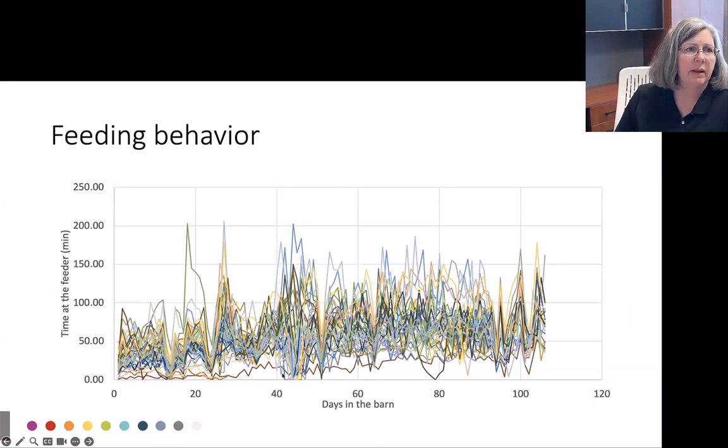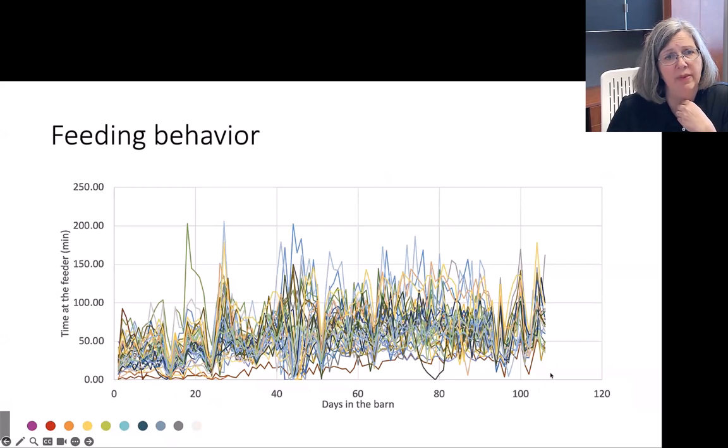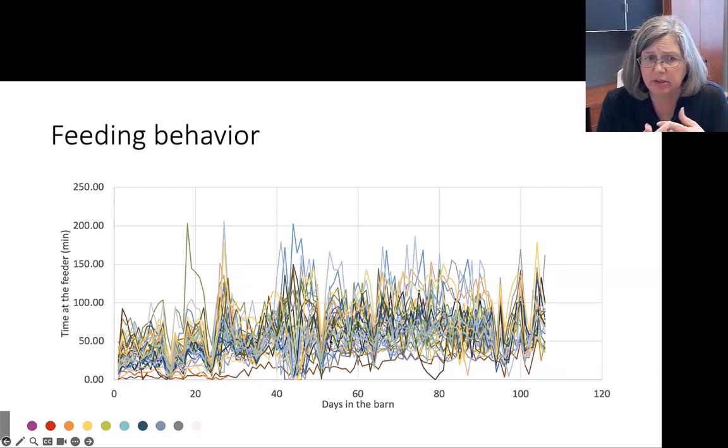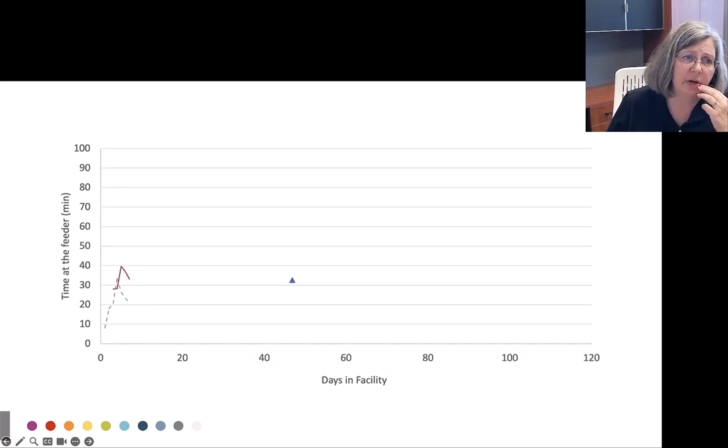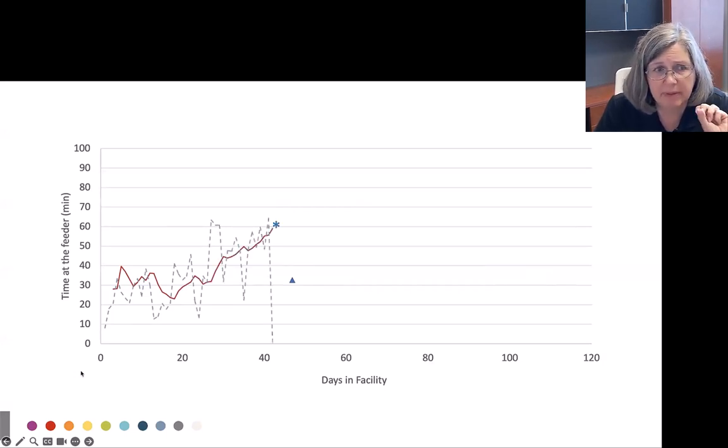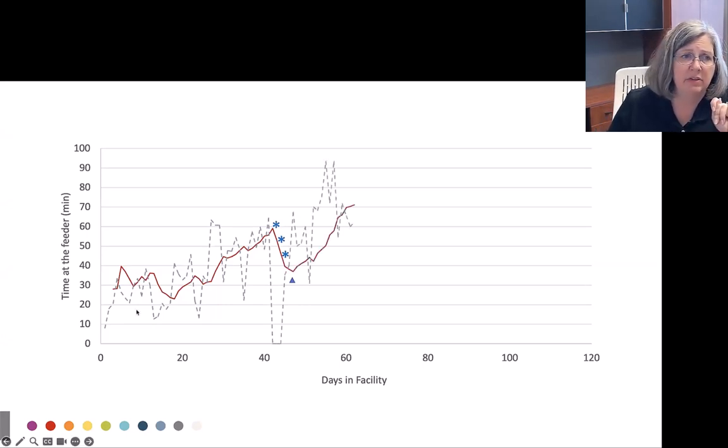This is 40 pigs, time spent every day from the time they entered the facility at eight weeks and when they left about not quite four months later, and how much time each of them spends at the feeder every single day. While this is really messy and it doesn't look like it would really be important or something that we should track, when we start peeling that stuff back and we start looking at individual animals we really see some interesting patterns emerging. So I have two individual animals that we're going to look at. This is time that they spend at the feeder and the days in the facility, and remember this is over 24 hours. The dotted line is where the pig actually spends in the feeder.